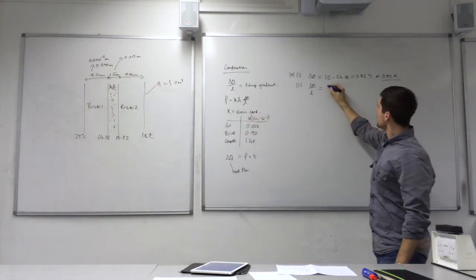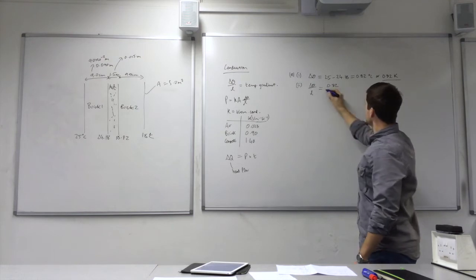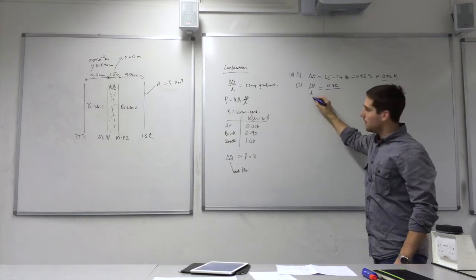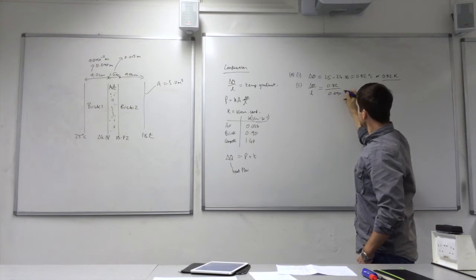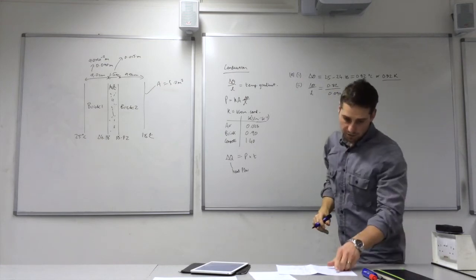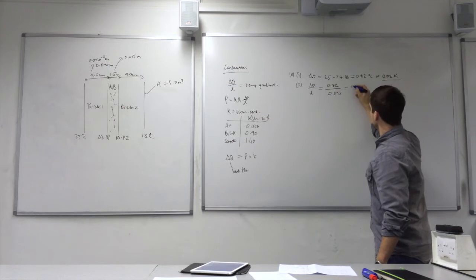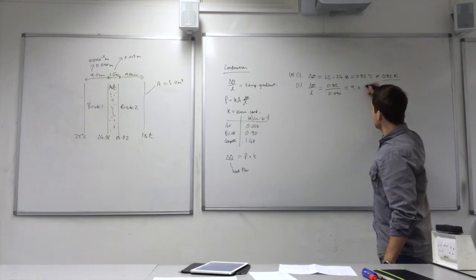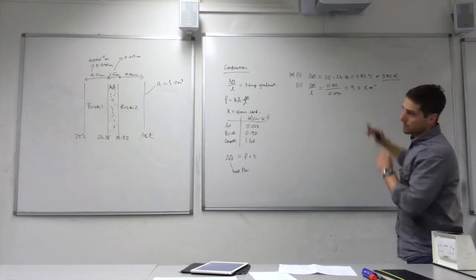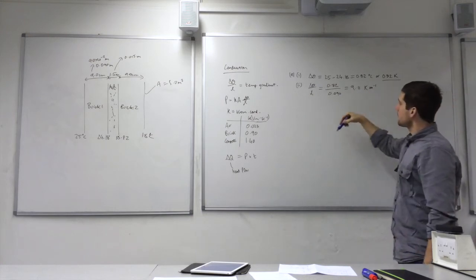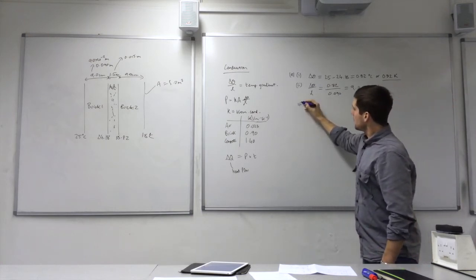So we take our temperature difference here, 0.82, divide it by L, which is 0.090. And our temperature gradient comes out as 9.11 Kelvins per meter. So I'm using Kelvins rather than degree C. That's question 2.